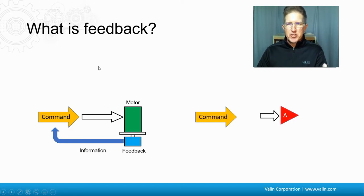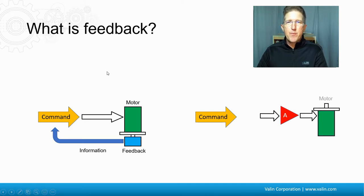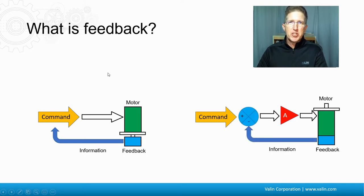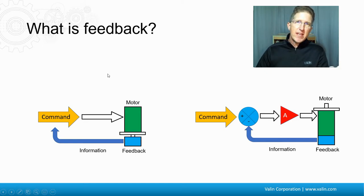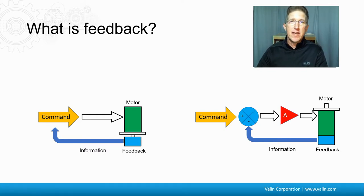If we look at this and restructure it a little bit, the command comes through and goes through some electronics. In this case, A is for amplifier, and the amplifier powers the motor. We put a feedback device onto the back of the motor, and that provides information back to a summing junction. The command comes in and gets subtracted — the information coming back gets subtracted from it. That's why there's a plus and a minus there. The error, the difference between the two, is what goes on to the amplifier.